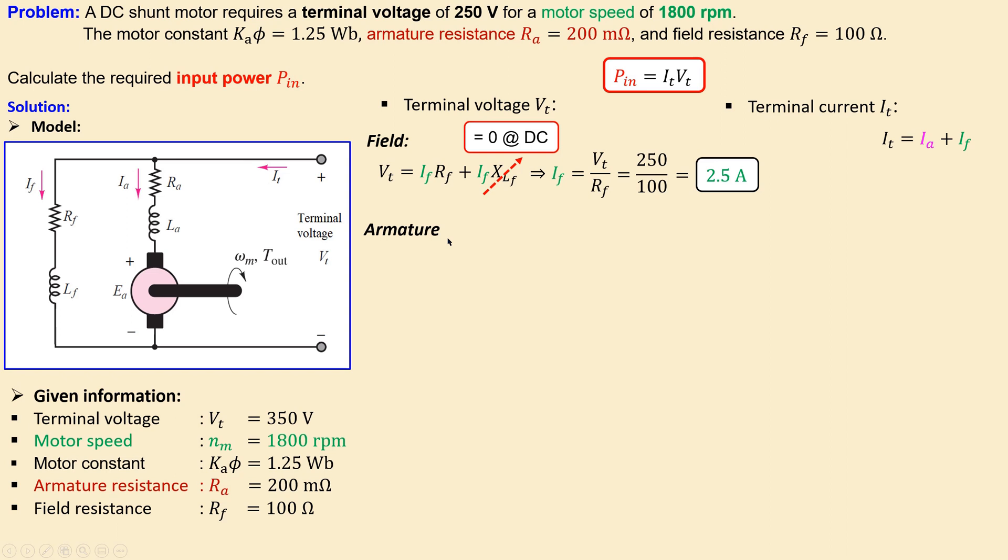Okay, now moving on to the armature. The armature part is this and we again can apply the Kirchhoff voltage law. We can say this terminal voltage will be then the voltage across this armature plus the voltage across this inductor part and also the back EMF that's shown here. And again we can say the similar situation: at DC the inductor of the armature part will be zero, reactance of that part will be zero. So we can delete that in this expression so we only have the first and the second term.